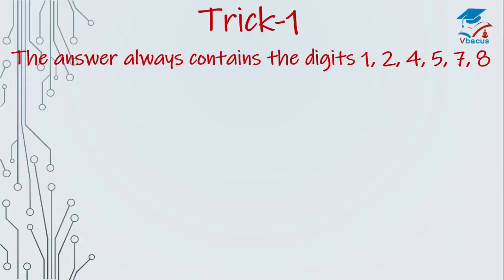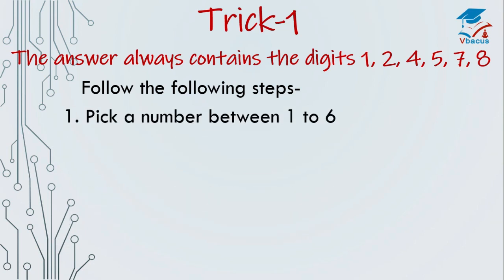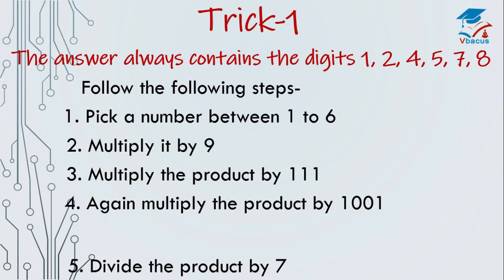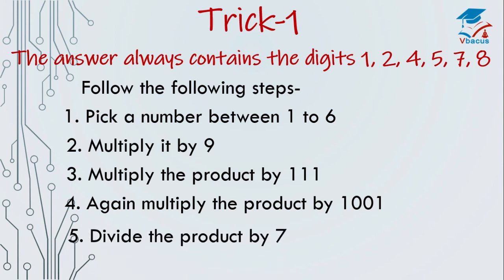Trick 1. The answer always contains the digits 1, 2, 4, 5, 7, 8. Follow the following steps. Pick a number between 1 to 6. Multiply it by 9. Multiply the product by 111. Again multiply the product by 1001. Divide the product by 7.